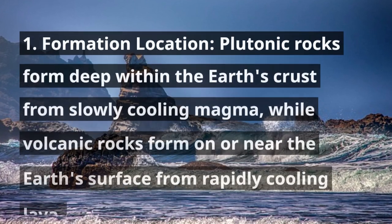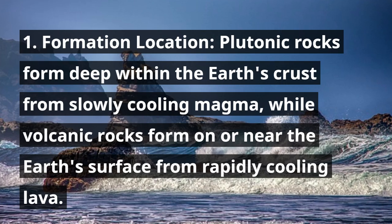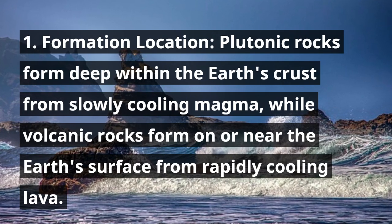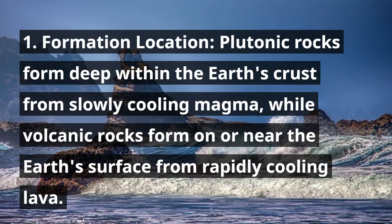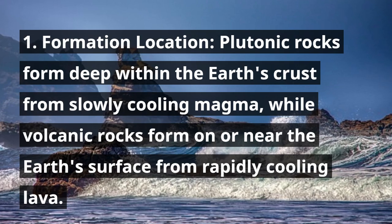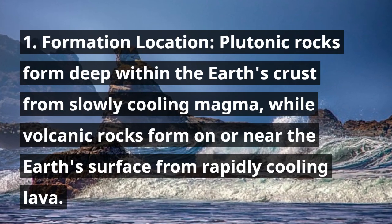Formation Location: Plutonic rocks form deep within the Earth's crust from slowly cooling magma, while volcanic rocks form on or near the Earth's surface from rapidly cooling lava.